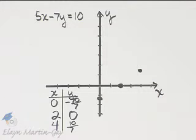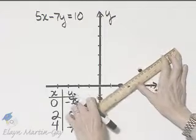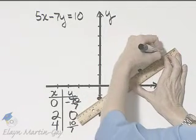Notice they all do lie along the same straight line. And the line through them is the graph of 5x minus 7y is equal to 10. And here's the graph.